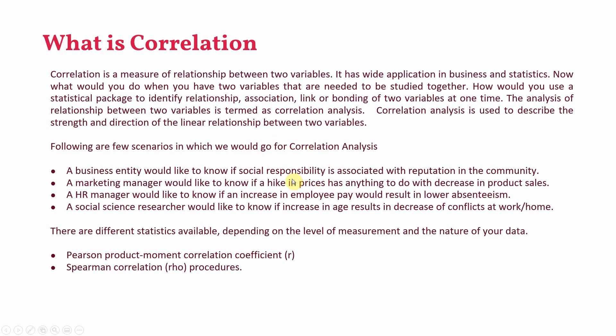In all these examples, we see two variables being related with each other. A higher value in one might lead to a decrease or a higher value in the other variable. For example, if a business is investing in social responsibility initiatives, they would like to know if this is translating into better reputation in the community — whether an increase in social responsibility investment leads to an increase in reputation. Similarly, an HR manager would like to know if an increase in employee pay leads to lower absenteeism, so an increase in one value leading to a decrease in another.